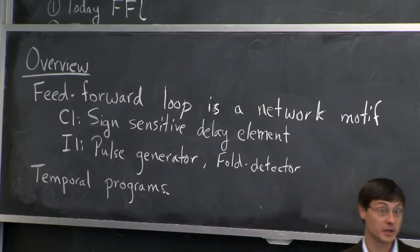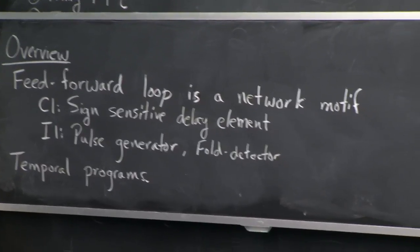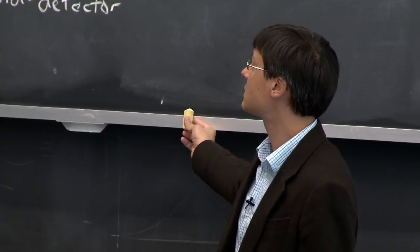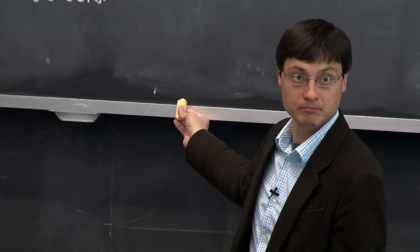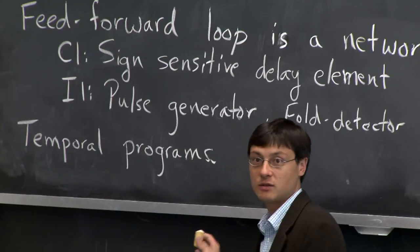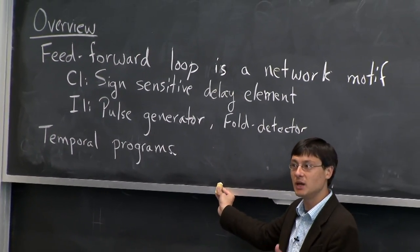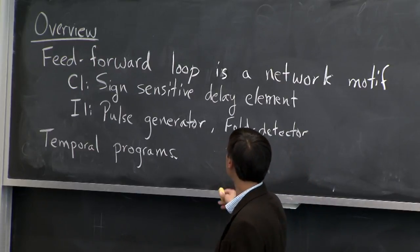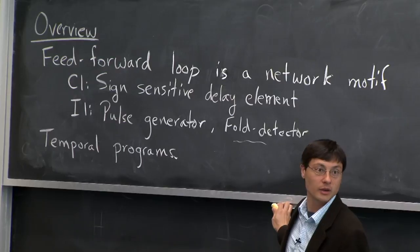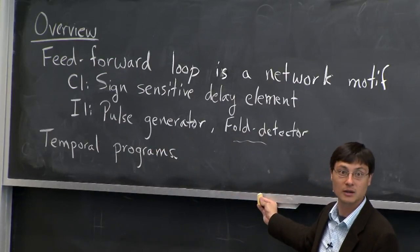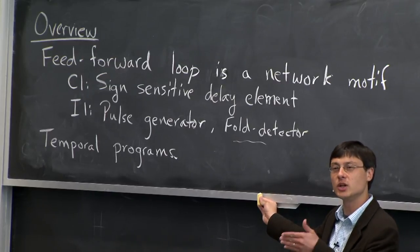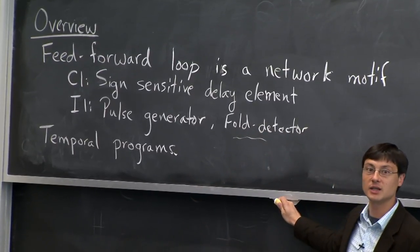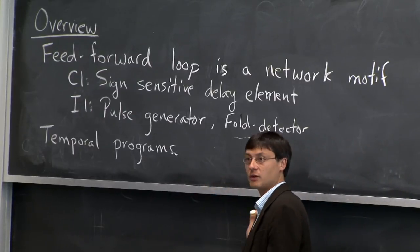After seeing that the feed forward loop is a network motif, there's the question of what might be the functional significance. In the chapter you just read, you found that the coherent type 1 feed forward loop has a nice attribute — it's a sign-sensitive delay element. The incoherent type 1 has the feature of being a pulse generator and can also speed up the response time. We'll also mention that the incoherent type 1 can act as a fold detector, sensing changes in the fold change of protein concentrations. Finally, we'll say something about how you can extend these ideas of network motifs to larger structures and get useful temporal programs.